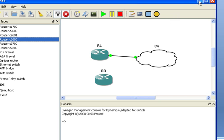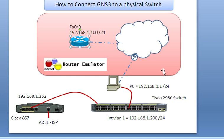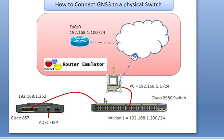So to do that, I need to configure the interface on this logical router inside GNS3 with a path to the internet - so a default route. The easiest way would be to remove the static IP address of 1.100 I gave it and instead have it get an IP address from this router's DHCP server, because that's what my PC does - my PC gets its IP address from this router, as most networks do. So I'm going to configure this router to get an IP address via DHCP, and then it should be able to ping something on the internet.